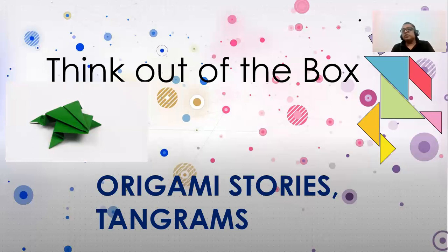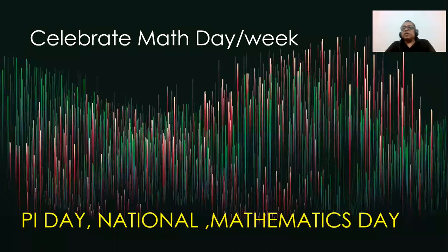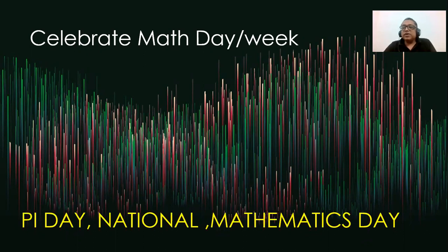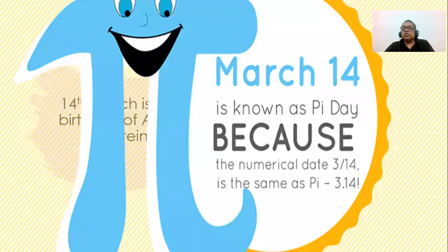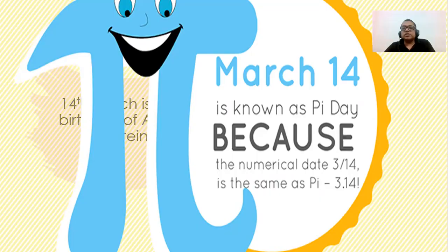Tangrams — you can make animals, birds, human beings, anything out of tangrams. Celebrate specialties: celebrate a maths day, a Pi day. One school invited me to celebrate their national maths day and they celebrated Ramanujan's birthday. A Pi day can be done on 14th March — you know why? Because 3.14 is the approximate value of pi. Children may not even know that 14th March is Pi Day. Put some competitions there and celebrate.